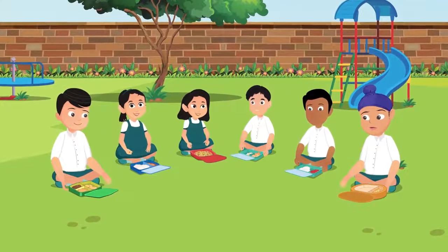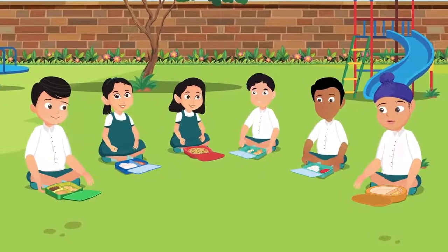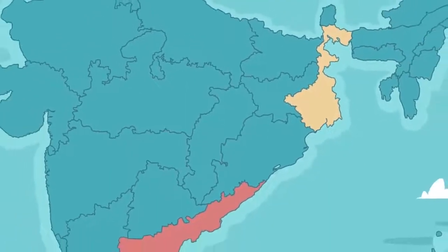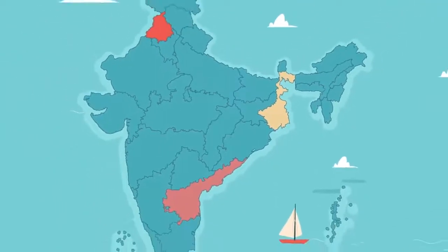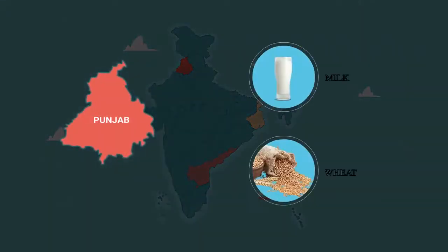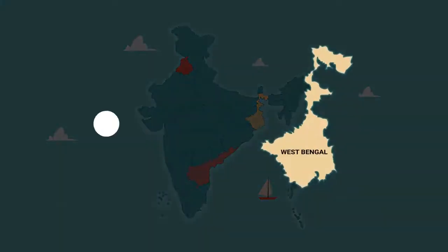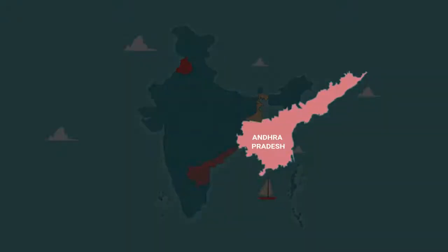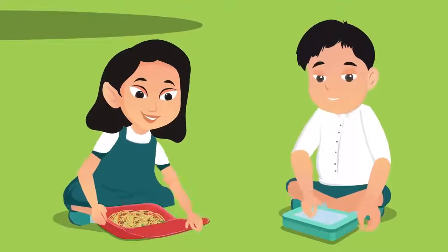Hello children, today let's travel further in our journey to understand food in different regions of India and the world. Different food items are consumed depending on what kind of things are easily grown and available in that region. For example, Punjab is rich in production of milk and wheat, hence food items made from them are consumed more. Rice is popular in West Bengal, and Andhra Pradesh is known for the production of chili.